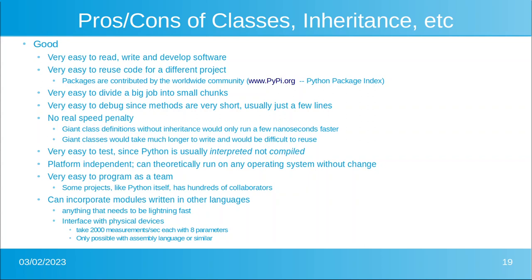Here are some of the reasons object-oriented programming is good. It's much easier to read, write, and develop software. It's very simple to reuse code. There's a worldwide community website, the Python Package Index, where you can download literally thousands of different packages written by people all over the world. It's very easy to divide a big job into small chunks when working with a team. It's very easy to debug, since methods are usually very short — just a few lines — and it's considered bad practice for a method to be longer than a screen. There's no real speed penalty.